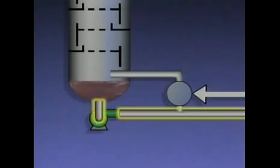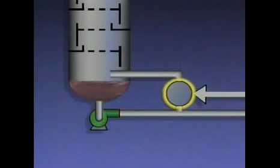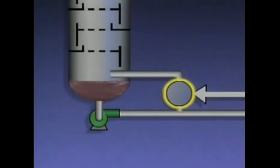Some of this liquid is drawn off as the bottoms product, and some of it is routed to a device called a reboiler, which is connected to the bottom of the tower. The reboiler is usually a heat exchanger that's designed to vaporize the lighter components that remain in the liquid from the bottom of the tower.